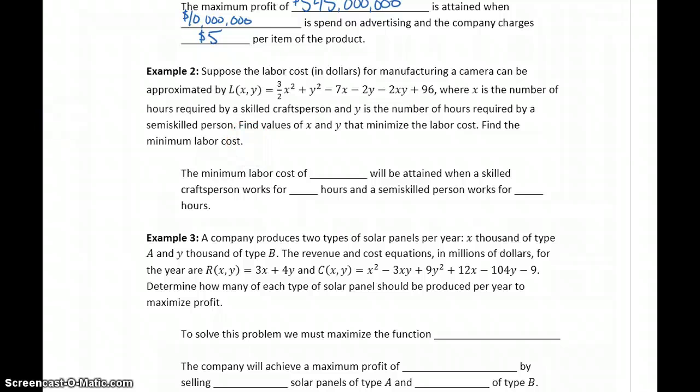So what this means is, a minimum labor cost of $54.50 per camera will be obtained when a skilled craftsperson works for x equals 9 hours and a semi-skilled craftsperson works for y equals 10 hours.